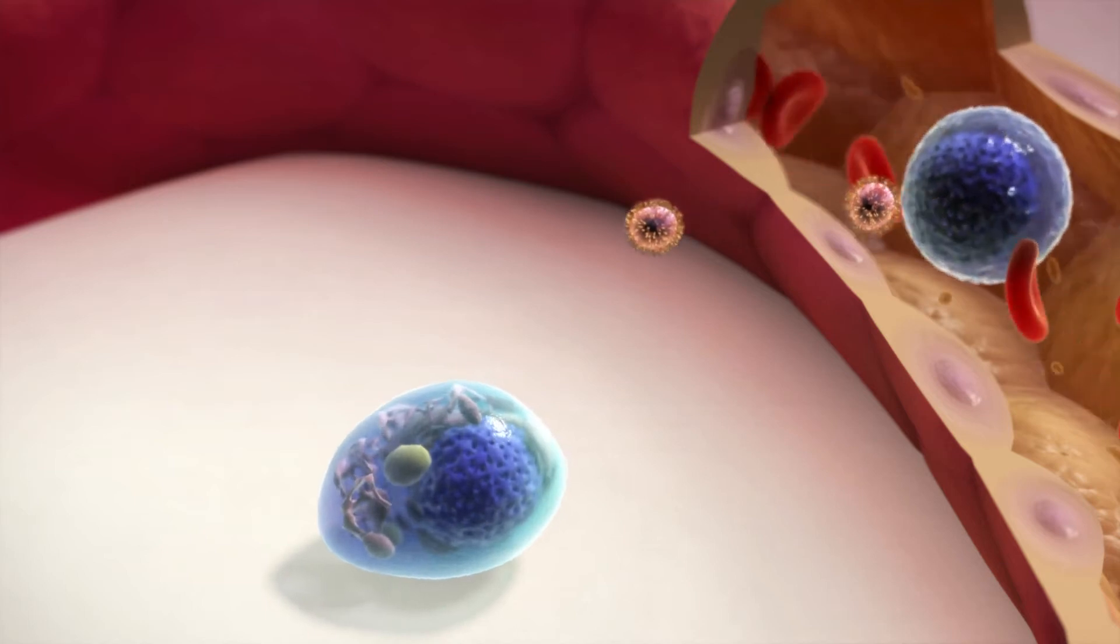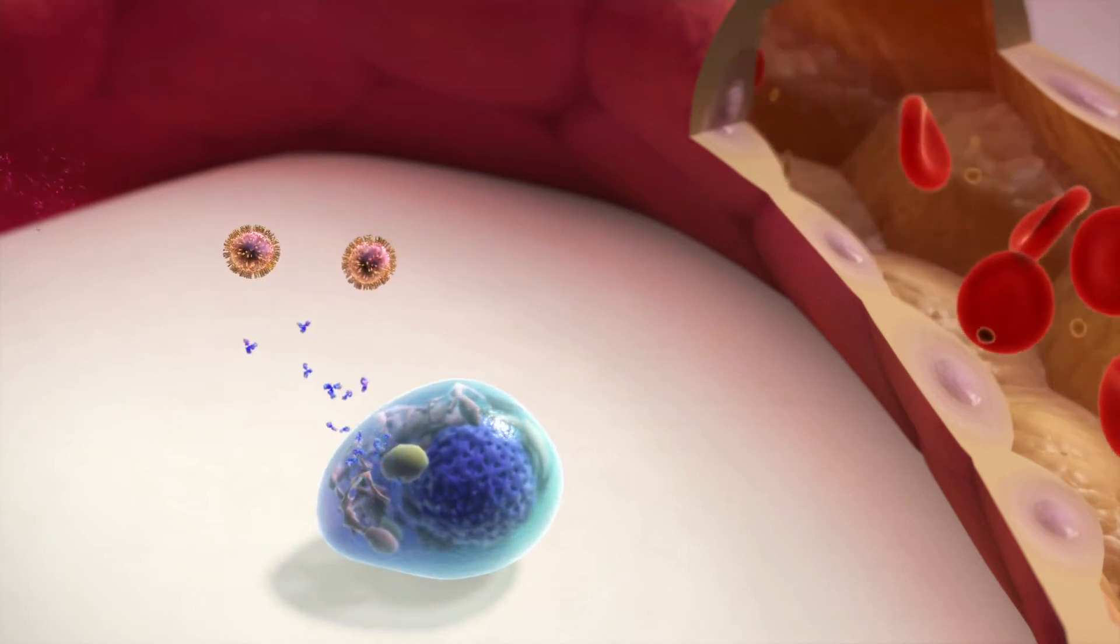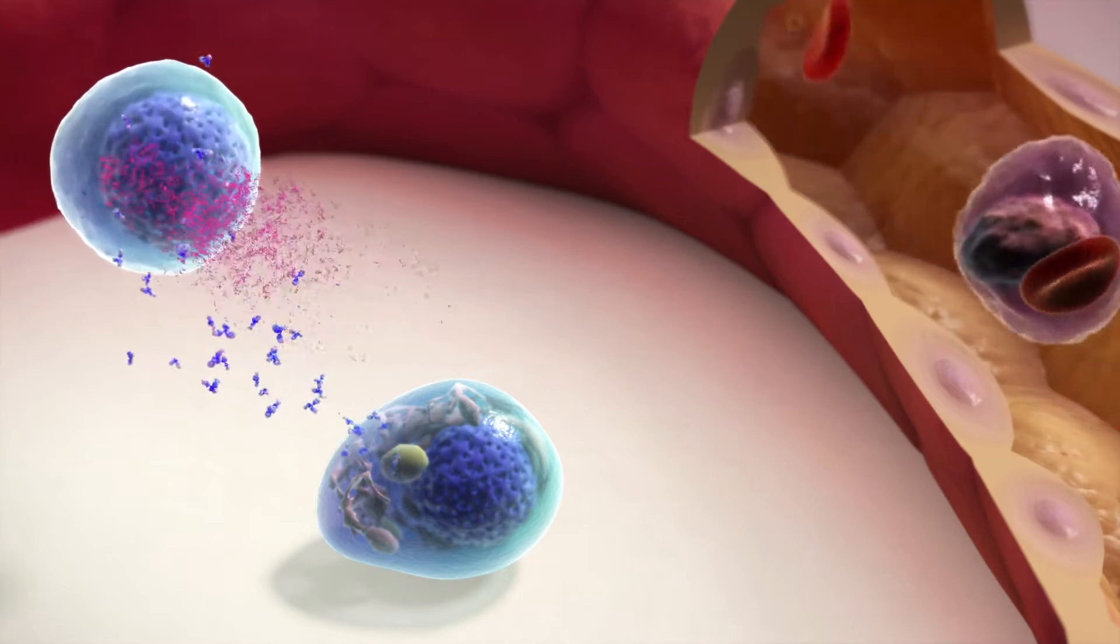Antibodies are made in the bone marrow by a type of white blood cell called the plasma cell. They play an important part in helping the immune system fight infection.